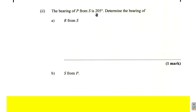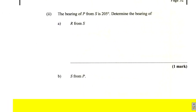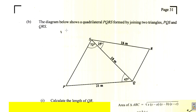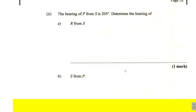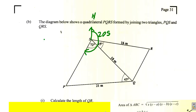The bearing of P from S is 205 degrees. Remember, when you say 'from S', S is where you draw your north line and you make your arc to P. Bearings are measured from the north in a clockwise direction. So this is 205 — the bearing of P from S is 205 degrees.